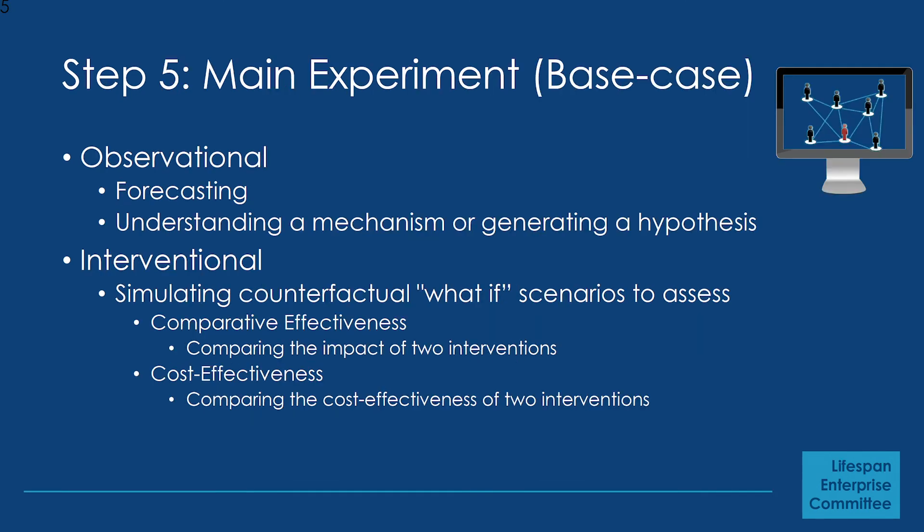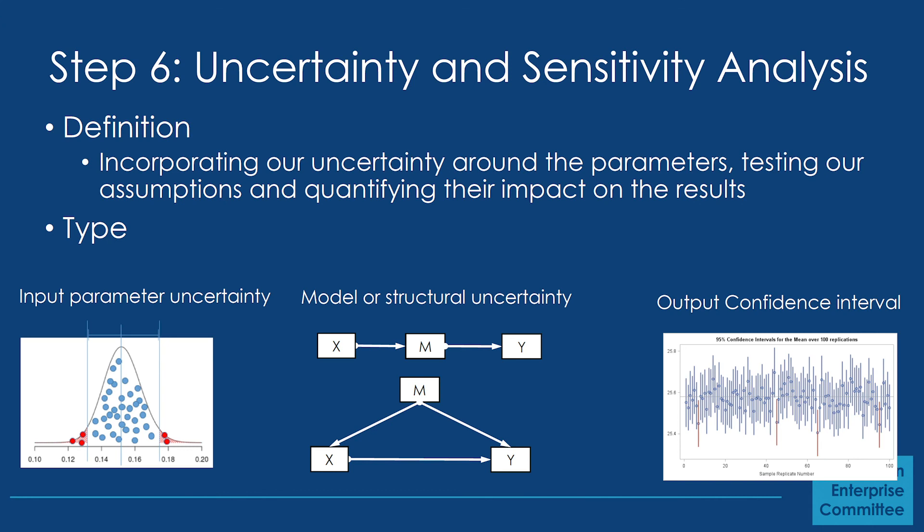Then we run our experiment. We can simulate counterfactual scenarios, comparative effectiveness, or cost-effectiveness. Or we can simply observe a phenomenon like forecasting, understanding a mechanism, or generating a hypothesis. Lastly, we want to quantify uncertainty because we're not certain about the different parameters we put into the model. We include uncertainty around parameters — as you can see, confidence intervals surrounding the parameters themselves. We can also test different model structures to see how best our model reflects reality.